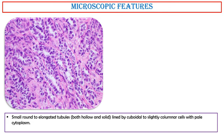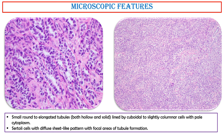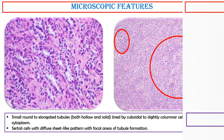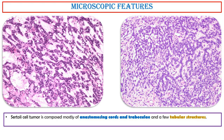This image shows small round to elongated tubules, both hollow and solid, lined by cuboidal to slightly columnar cells with pale cytoplasm. This image shows Sertoli cells with a diffuse sheet-like pattern with focal areas of tubule formation. In these two photos, the Sertoli cell tumor is composed mostly of anastomosing cords and trabeculae and a few tubular structures, with a small amount of intervening myxoid stroma.